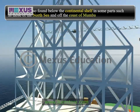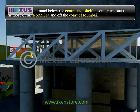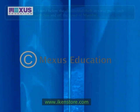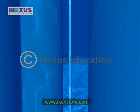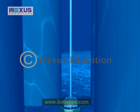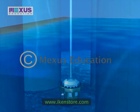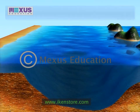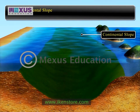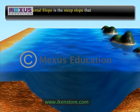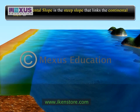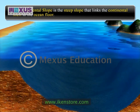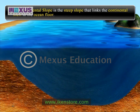Offshore rigs also pump petroleum from wells drilled into the continental shelf, such as at Bombay High off Mumbai. The second part of the ocean floor is called the continental slope. It is the steep slope that links the continental shelf to the ocean floor, descending steeply almost to the bottom of the ocean.